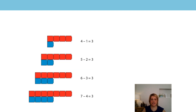Let's look at all these representations and calculations together now. Four subtract one is three. Five subtract two is three. Six subtract three is three. And finally seven subtract four is three. What's the same about all of these calculations? They all have a difference of three, and we can see there are three more red cubes in each representation. What's changing? The minuend and the subtrahend are changing by one each time. The minuend goes four, five, six, seven and the subtrahend goes one, two, three, four.